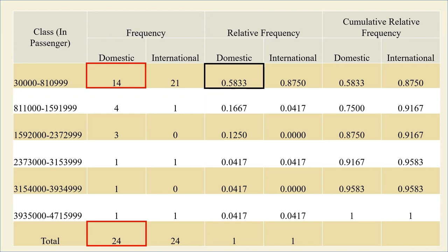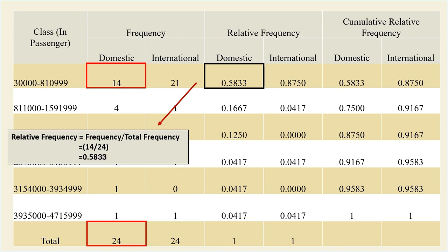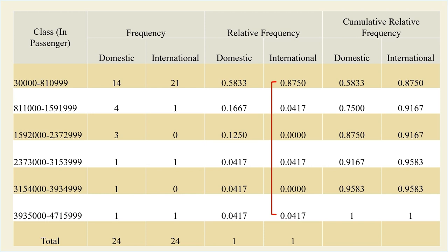Here is the calculation. Calculate the relative frequency in each row to get the rest of the column using the same formula. The same approach applies to the international relative frequency.